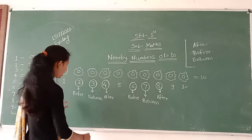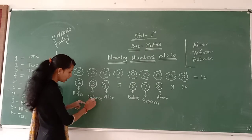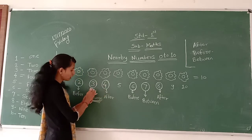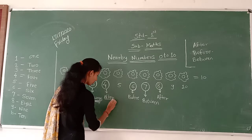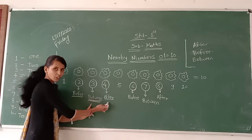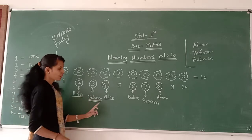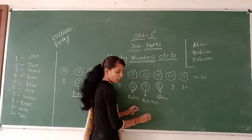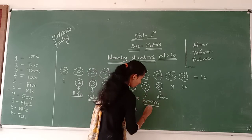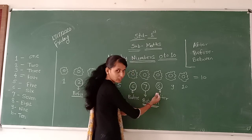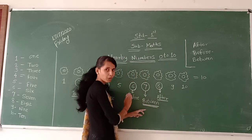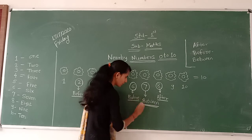Understand, children? See once again. 3 is middle number, means between number. After number is 4. Before number is 2. Between, after, and before. 7 is between number. 7 after is 8 — 8 is after number. 7 before is 6 — 6 is before number.